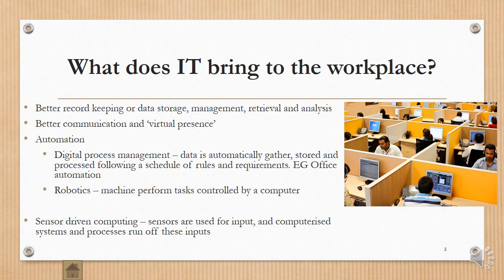Automation helps in digital process management. In office automation, you can put in place things that happen automatically. For example, billing your customers at the end of the month or checking that you've received money from them. These are things that should be happening automatically. The computer will take care of them and the staff only needs to check that it's all running smoothly.